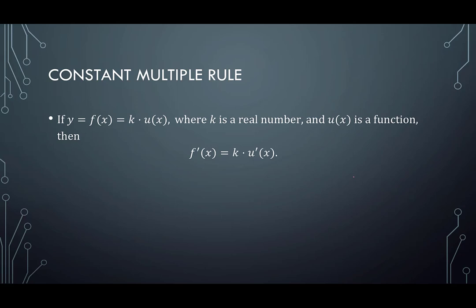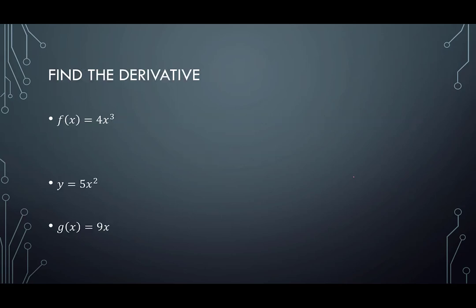Continuing to add to the rules, we have the constant multiple rule. So it says if y equals f of x, which is k times u of x, where k is a real number and u of x is a function, then f prime of x is k times u prime of x. That seems like a lot and it's really not that bad. It just says if we have a coefficient, we just leave the coefficient alone and we do our derivative the way we did before. Look at an example.